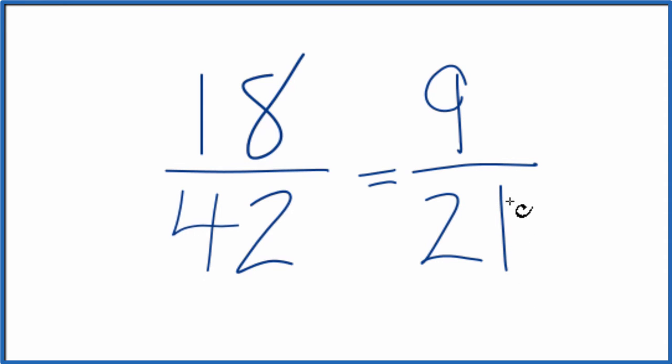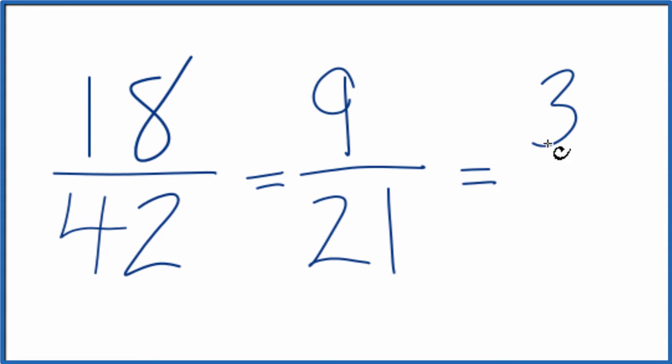It's a little easier for me to work with because I know that 3 will go into 9 and 21. 9 divided by 3 is 3, 21 divided by 3 is 7. So I can't reduce this any further, so this is in lowest terms.